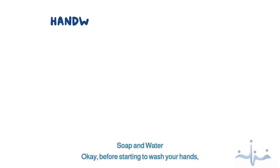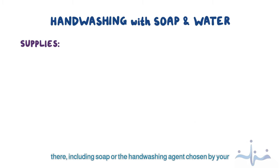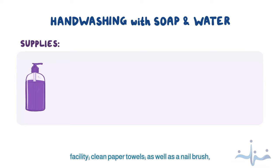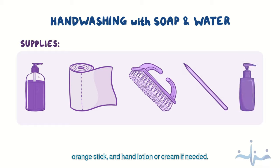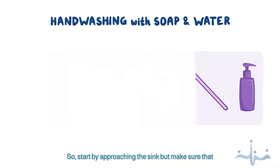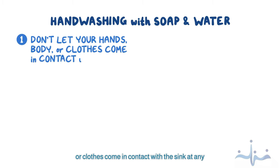Before starting to wash your hands, gather the supplies you'll need if they are not already there, including soap or the hand washing agent chosen by your facility, clean paper towels, as well as a nail brush, orange stick, and hand lotion or cream if needed. Start by approaching the sink, but make sure that you don't let your hands, body, or clothes come in contact with the sink at any time.